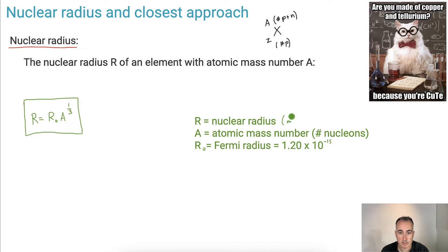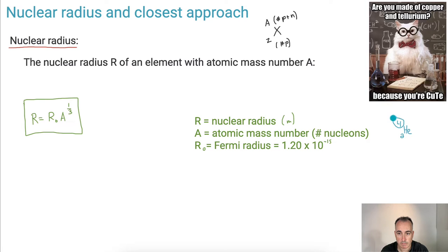A is the atomic mass number — the number of nucleons, the top number. For example, for helium — like an alpha particle, written as ₂⁴He — A would be 4. And R₀ is the Fermi radius: 1.2 times 10 to the minus 15 meters. You can look that up in your data booklet. It's also measured in meters.